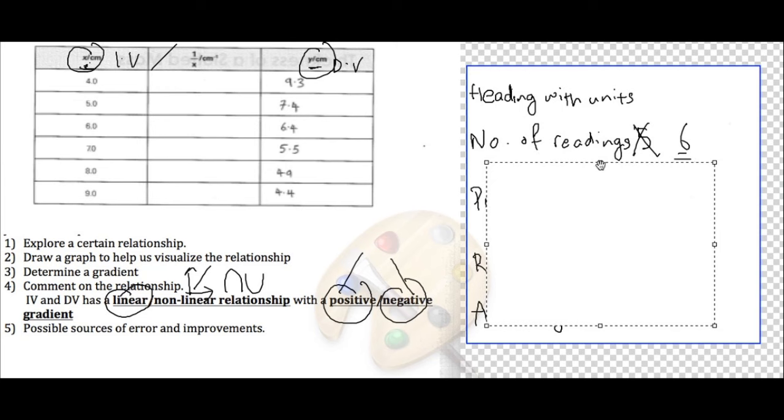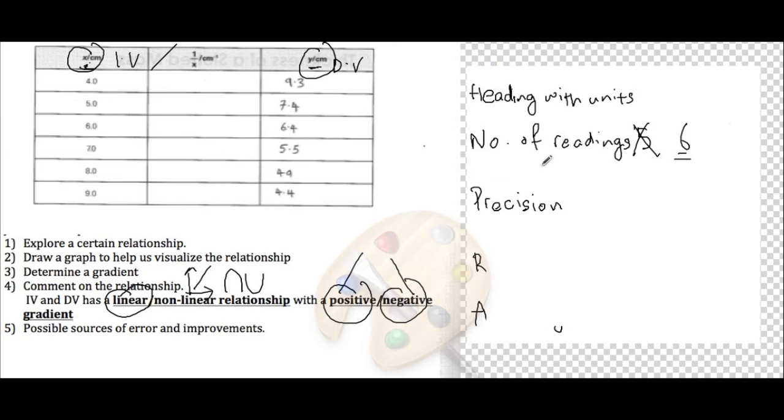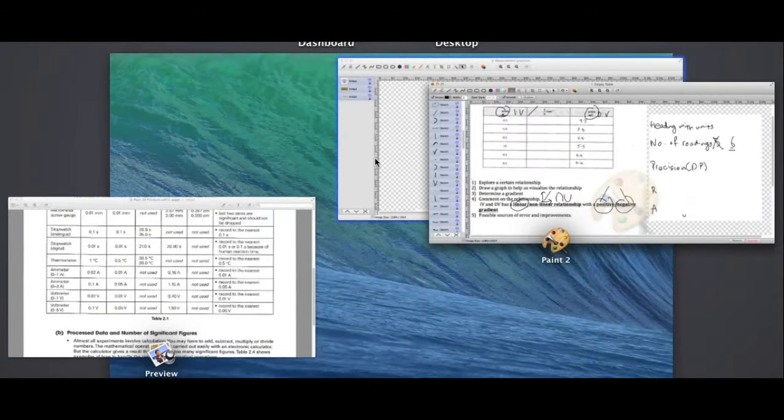The next thing has to do with P, your precision. The precision of your reading is basically just how many DP should I record down my reading to. This is a little bit more difficult, so I'll spend some time going through this.